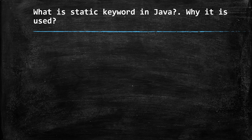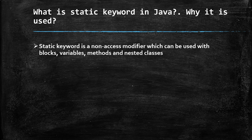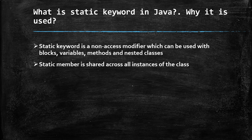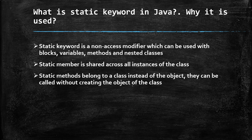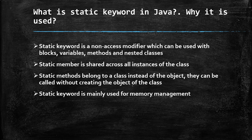The second question is: what is the static keyword in Java and why is it used? Similar to the final keyword, static is also a non-access modifier, and it can be used with blocks, variables, methods, and nested classes. It is shared across all instances of the class rather than the object. The biggest advantage is that when you declare a method as static, it can be called without creating an object of the class.